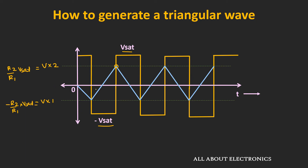The triangular wave voltage varies between the upper and lower threshold voltages. So we can find the peak-to-peak voltage from these two values. The peak-to-peak voltage for the triangular wave equals Vx2 − Vx1, which simplifies to 2 × (R2 / R1) × V_set. This is the peak-to-peak voltage expression for the triangular wave.